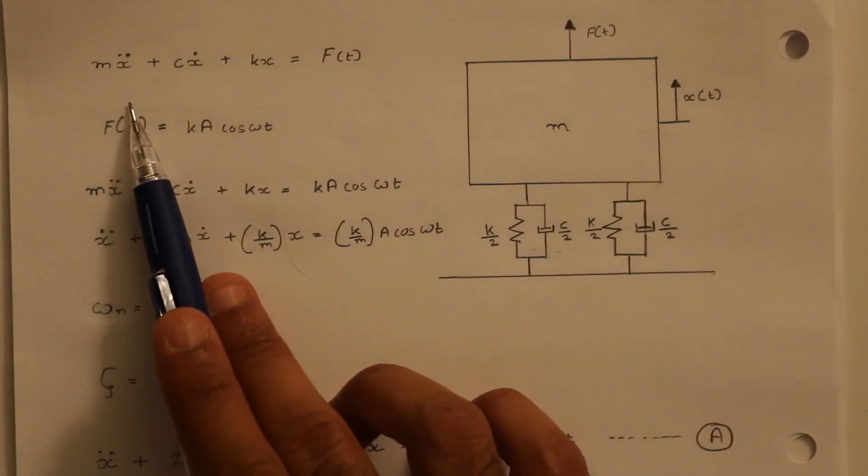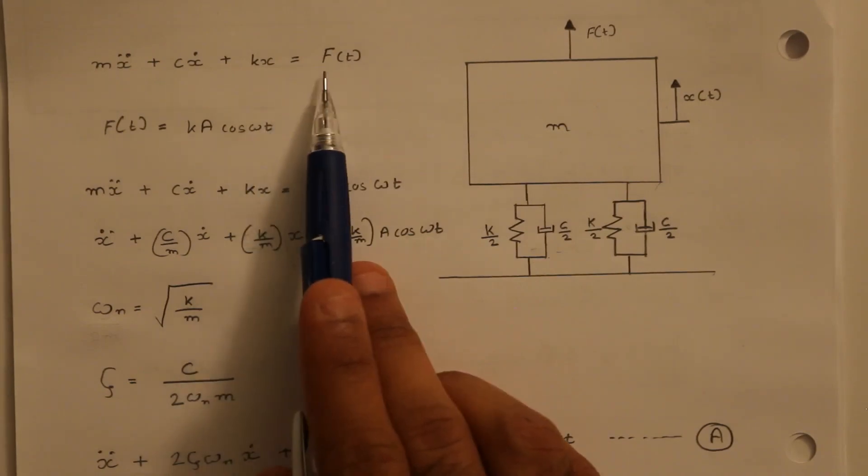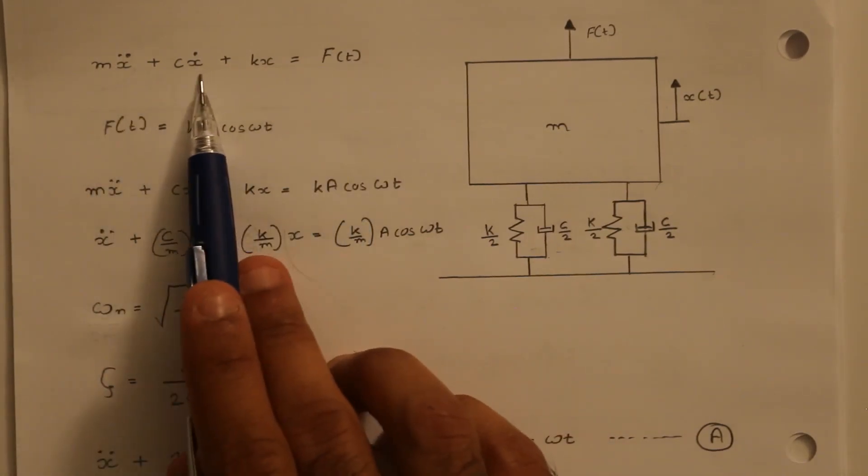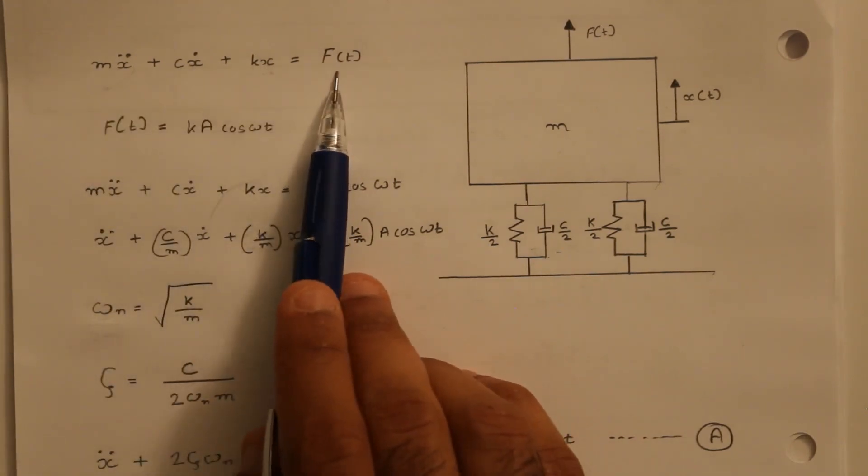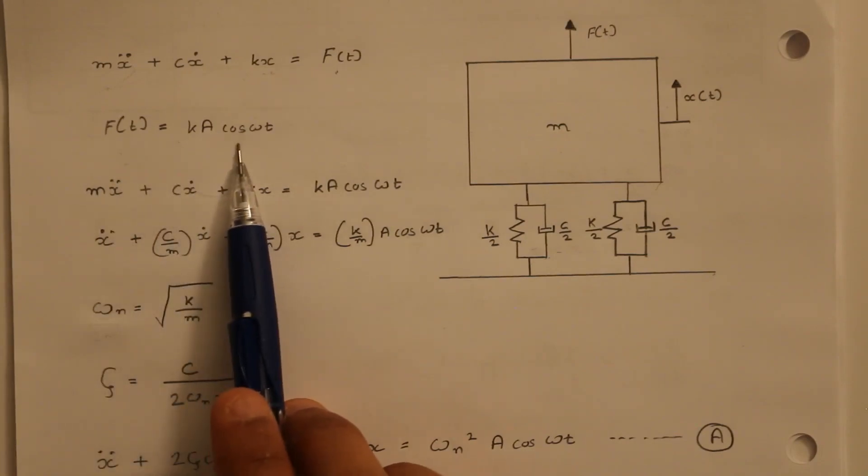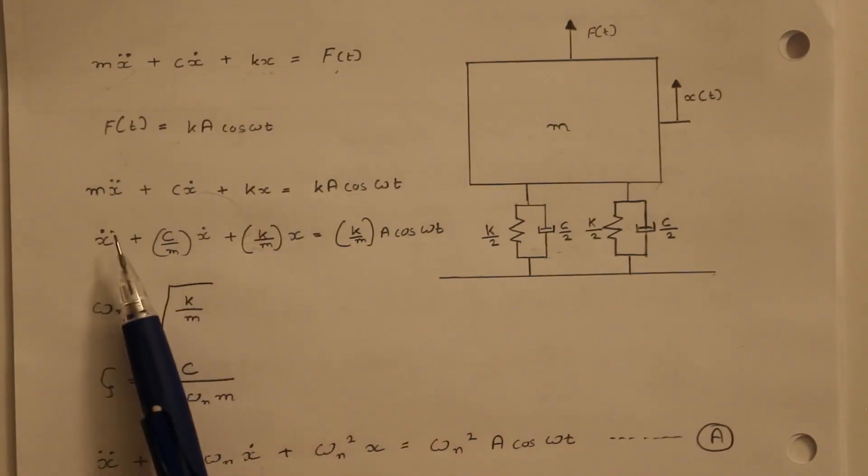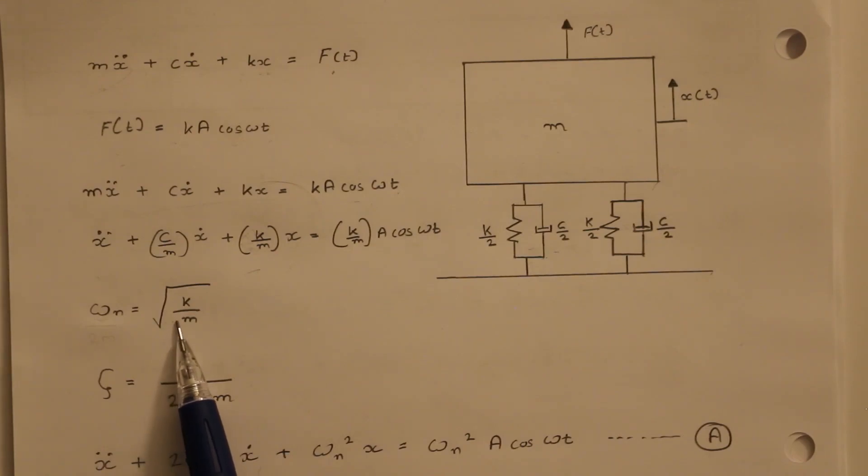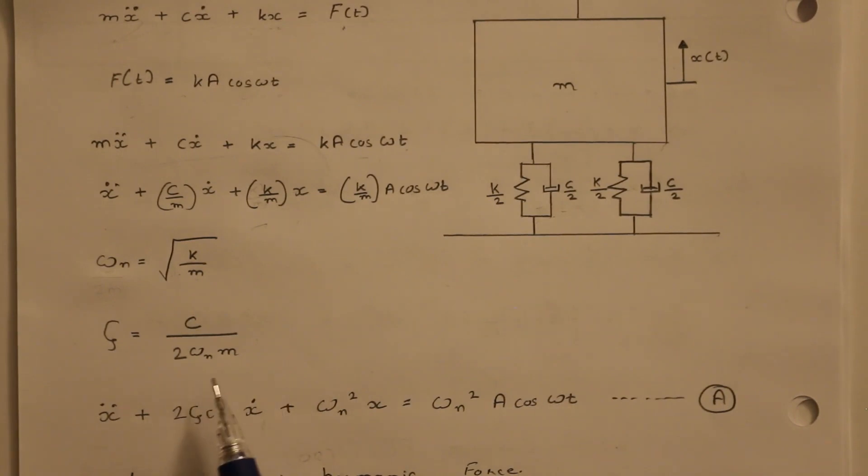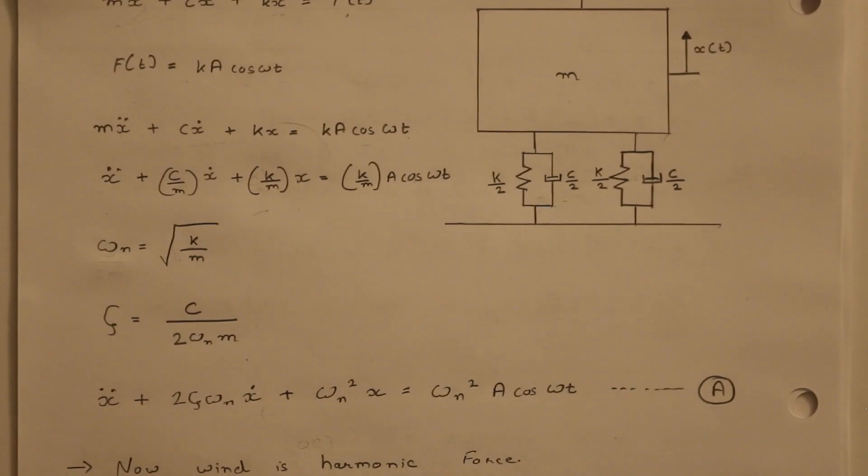So the motion can be described as mx double dot plus cx dot plus kx is equal to F(t). This is the inertial force of the system damping force the force that is generated in the system because of its inertial motion as well as the external force. Now F(t) because it's a harmonic function can be represented as ka cos ωt. I am just replacing the value of F(t) over here and dividing the equation with m. Now the function or I should say the equation root of k over m is also known as the natural frequency of the system while the viscous damping can be represented as c over 2ωn into m. Now again this viscous damping is coupled with the natural frequency of the system.